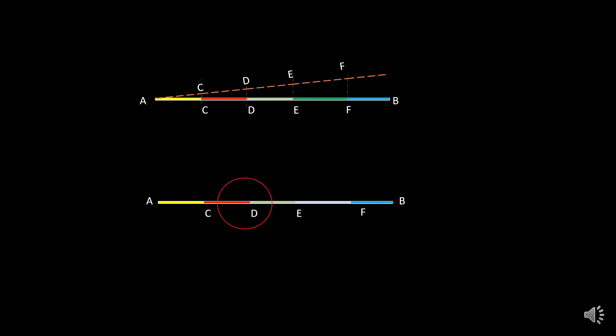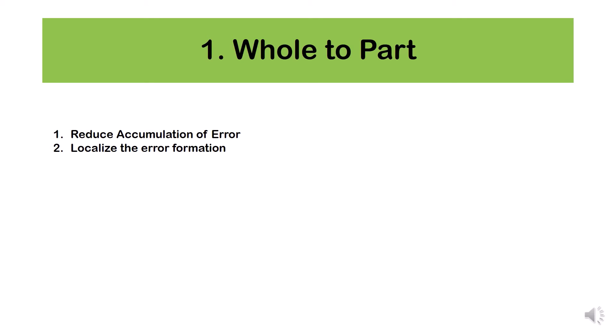In hold-to-part method, we move from outward to inward, which helps reduce the possibilities of error because we have different main reference points. In the part-to-hold method, we only have a single reference — if the starting goes wrong, all succeeding measurements go wrong. But in hold-to-part, we have different starting references, so accumulation of error is reduced. The important advantages are: it reduces accumulation of error and it helps to localize the error so that correction is very much possible.